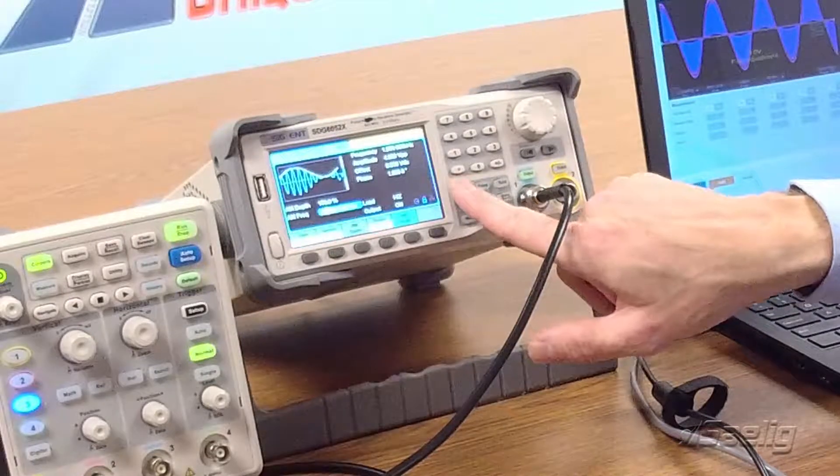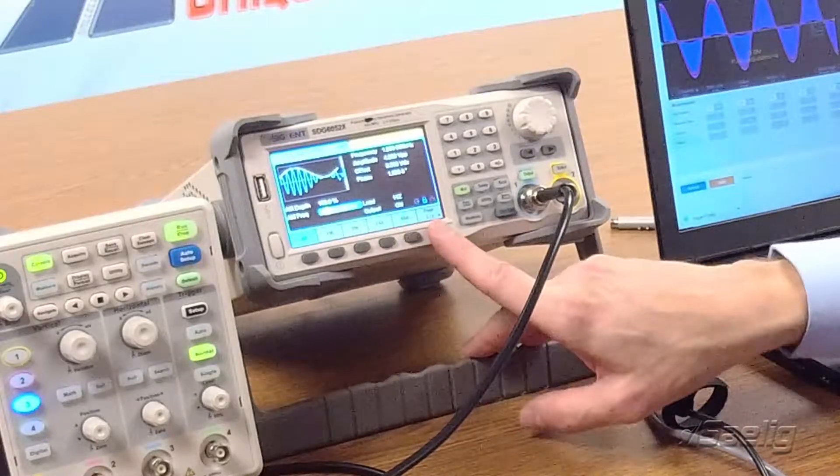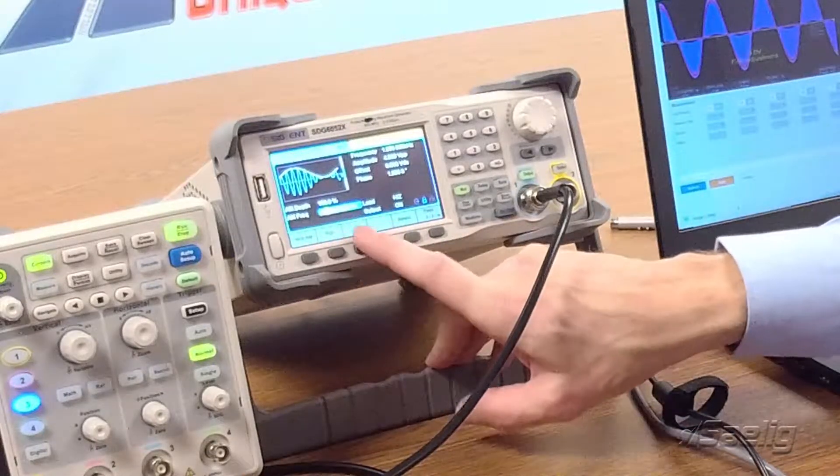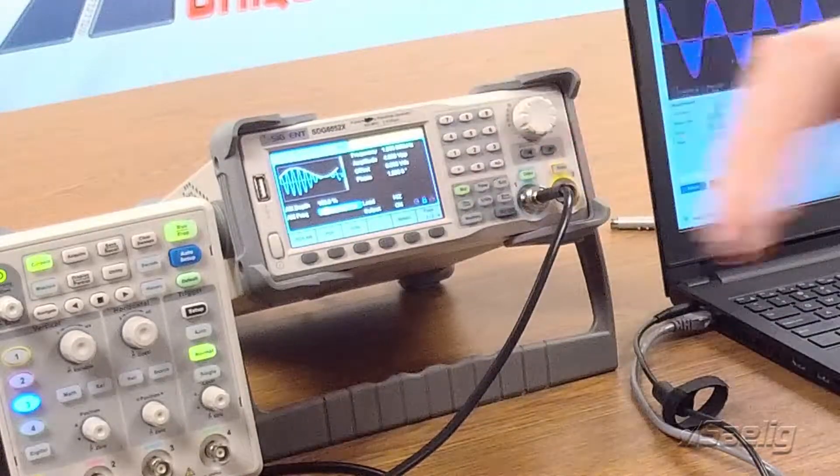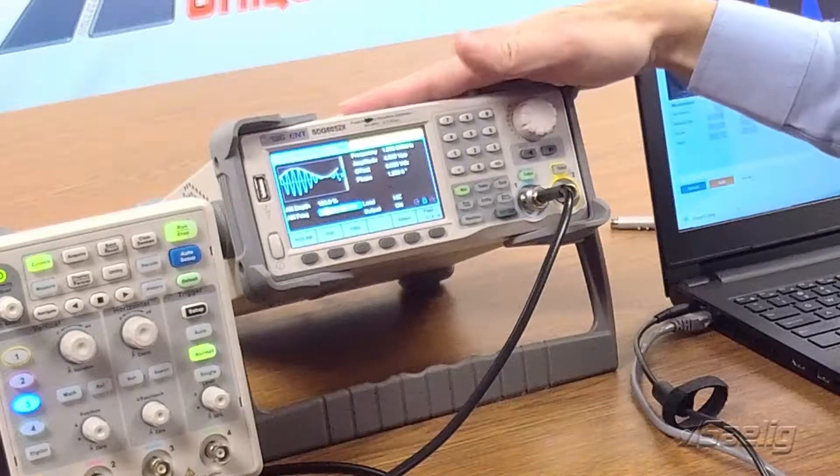We also have a number of modulation schemes. We've got AM, FM, PM, FSK, ASK, sideband AM, PSK. Pulse width modulation is also available when we select the pulse width capability. So really a powerful box.